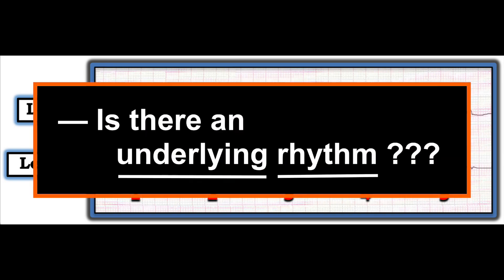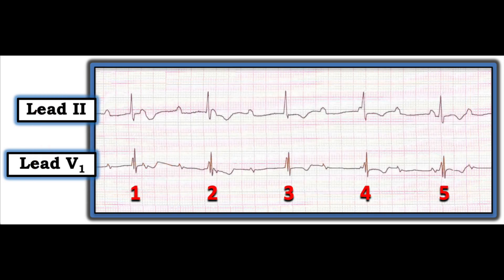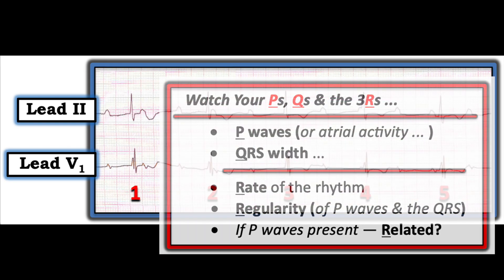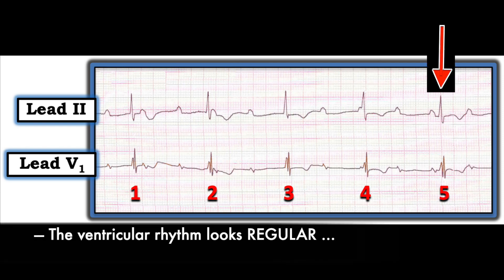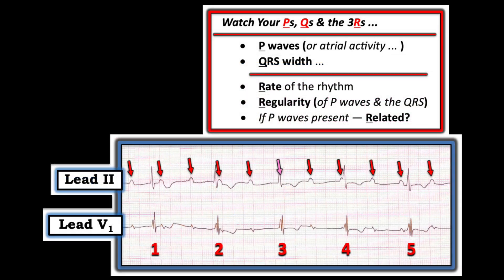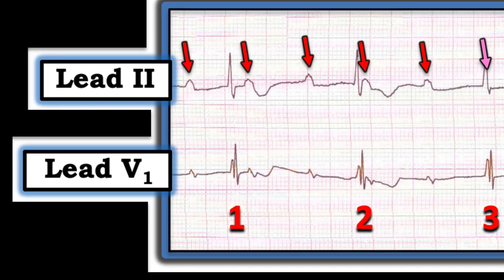The easier parts: let's see if there's an underlying rhythm, using P's, Q's, and the three R's. Is the ventricular rhythm regular? Yes, there are P waves that are pretty regular, and the QRS is regular and wide. What is the rate? The ventricular rhythm spans a little more than six large boxes — 300 divided by 6 — so the rate is just under 50 per minute.